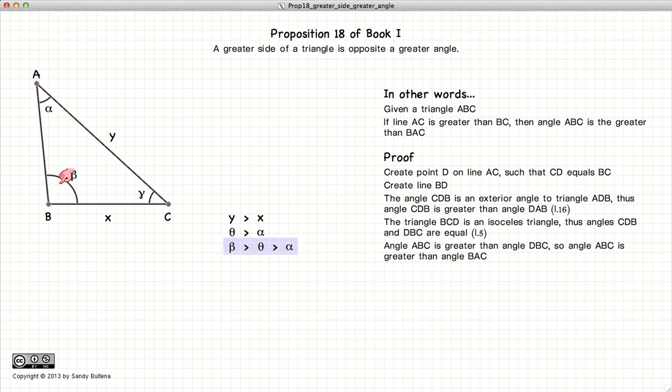So beta, the angle opposite the larger side, is larger than alpha, which is the angle opposite the smaller side.